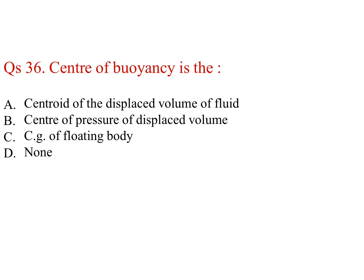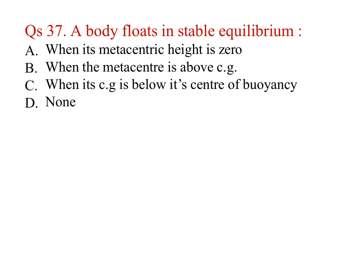A body floats in stable equilibrium when its metacentric height is zero, when the metacenter is above CG, when its CG is below its center of buoyancy, or none.